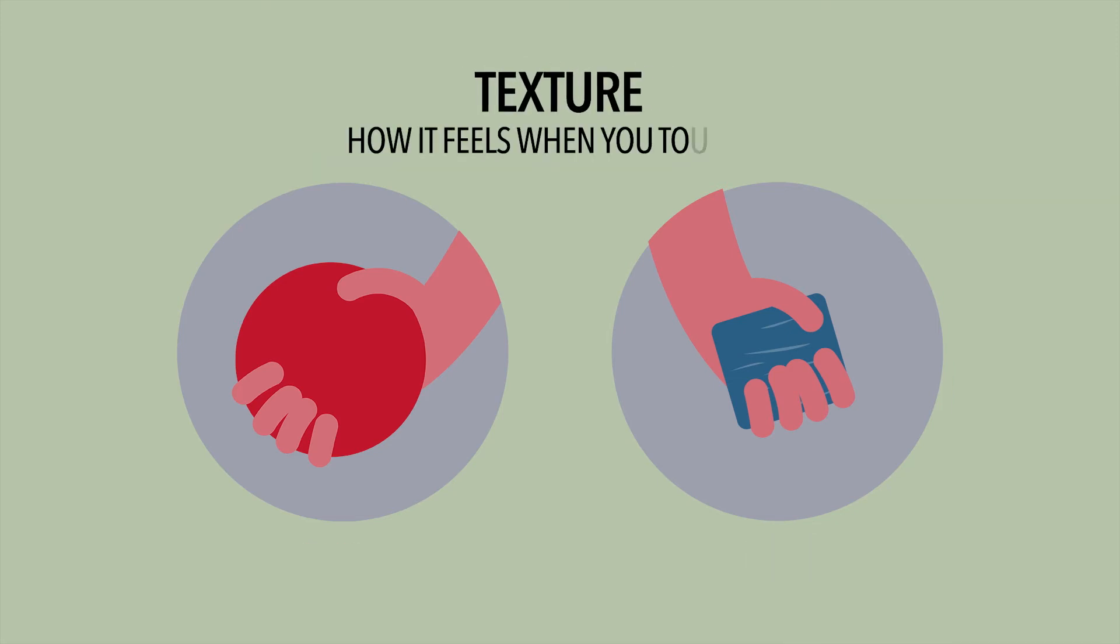Next, the texture. How it feels when you touch it. The red ball is smooth. The block of wood is a little rough.